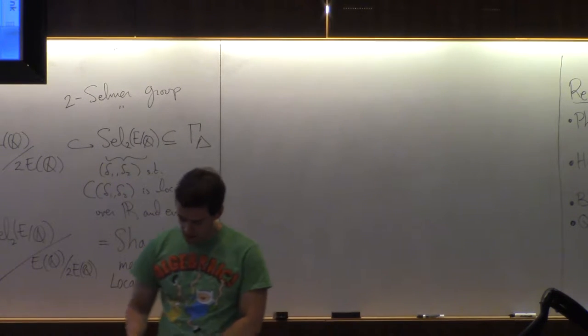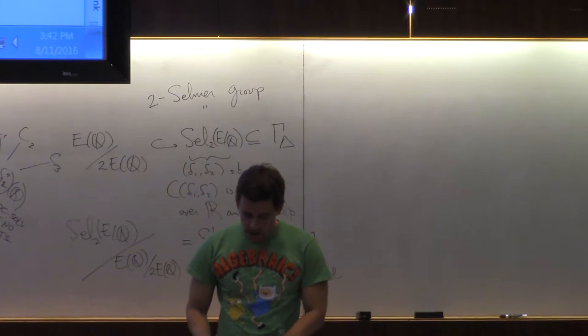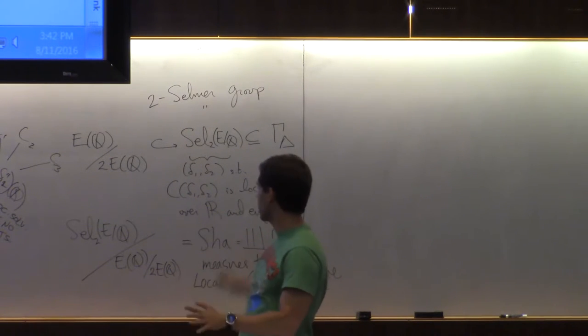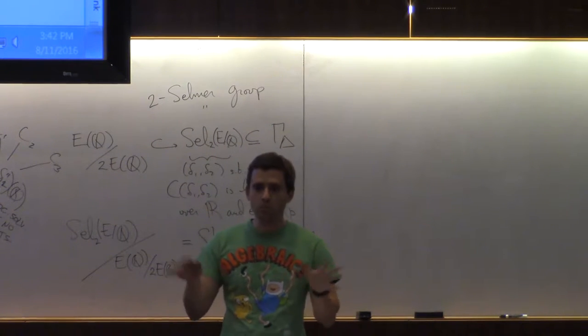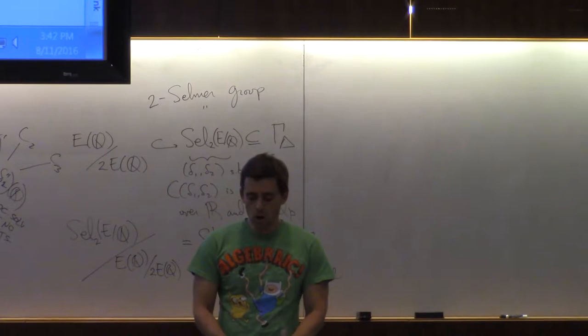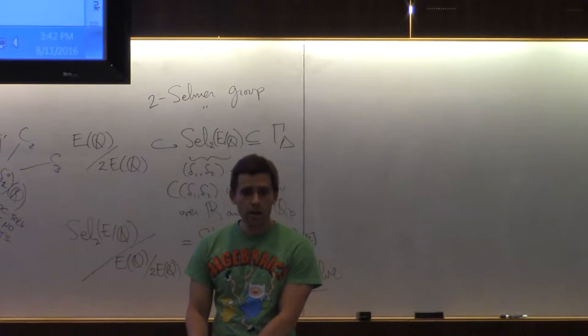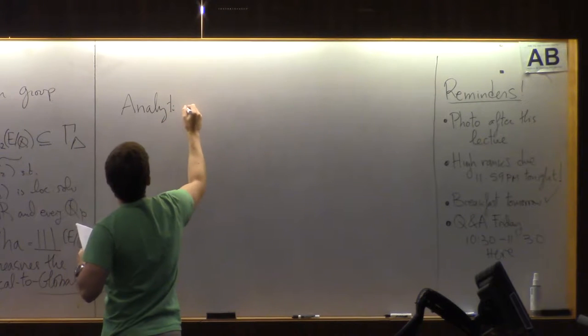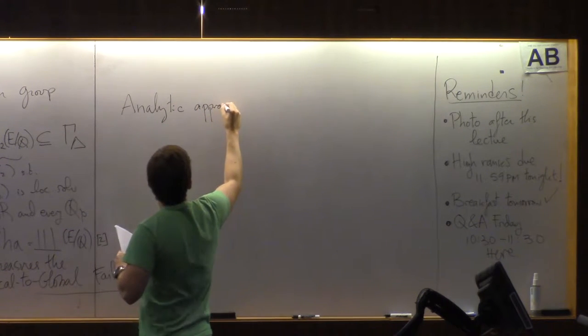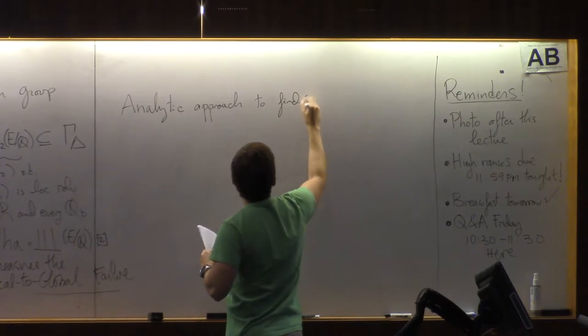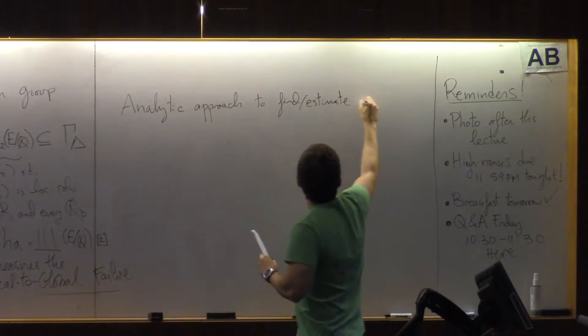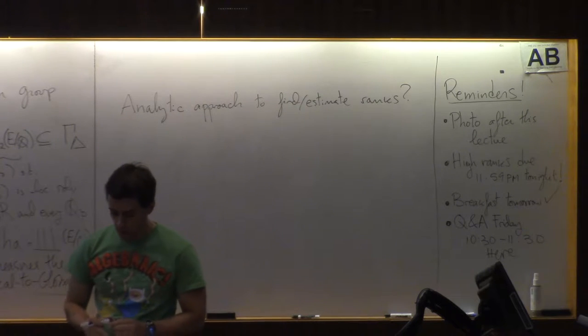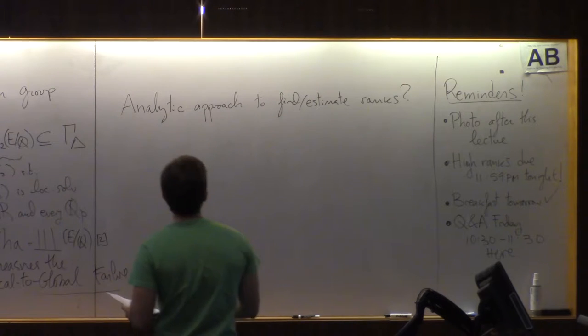Okay. So I have like 10 minutes left to talk about the Birch and Swinnerton-Dyer conjecture, which is the following. So we've done some algebraic methods, and we've succeeded to some extent that we can actually, at least for small coefficients, we can get around and find the rank. So are there analytic ways to find the rank? Is there an analytic approach to find or estimate the rank? Well, that is exactly what Birch and Swinnerton-Dyer were trying to do in the 60s.